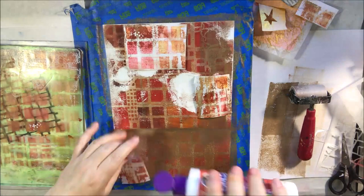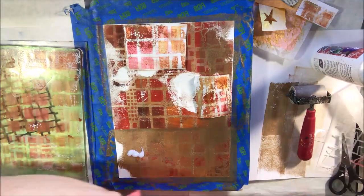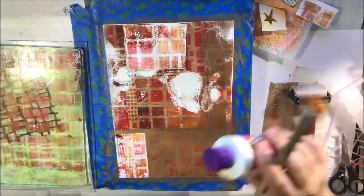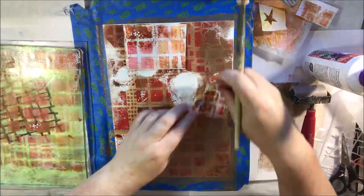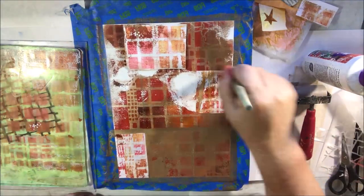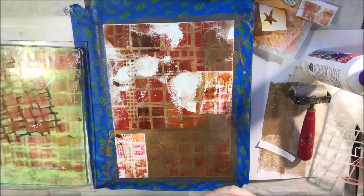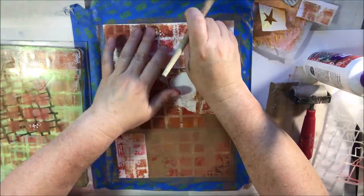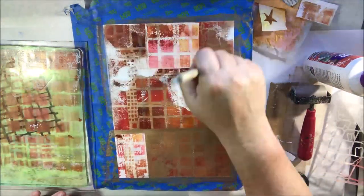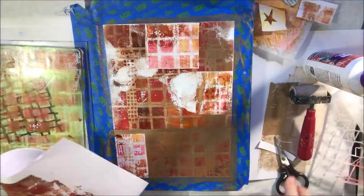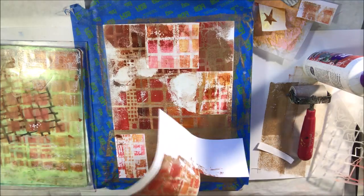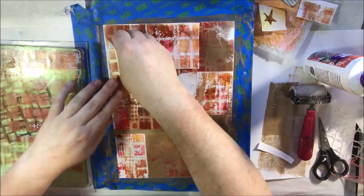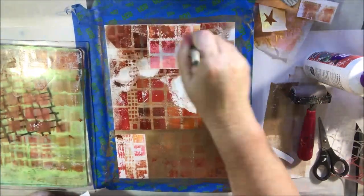I'm using some collage podge, which is an Eileen's product that is glossy, to do my collage on my page. Any of my collage on my page today is with this gloss glossy medium because the colors being silver metallic and bronze metallic, I don't want to dull them down using a matte medium.